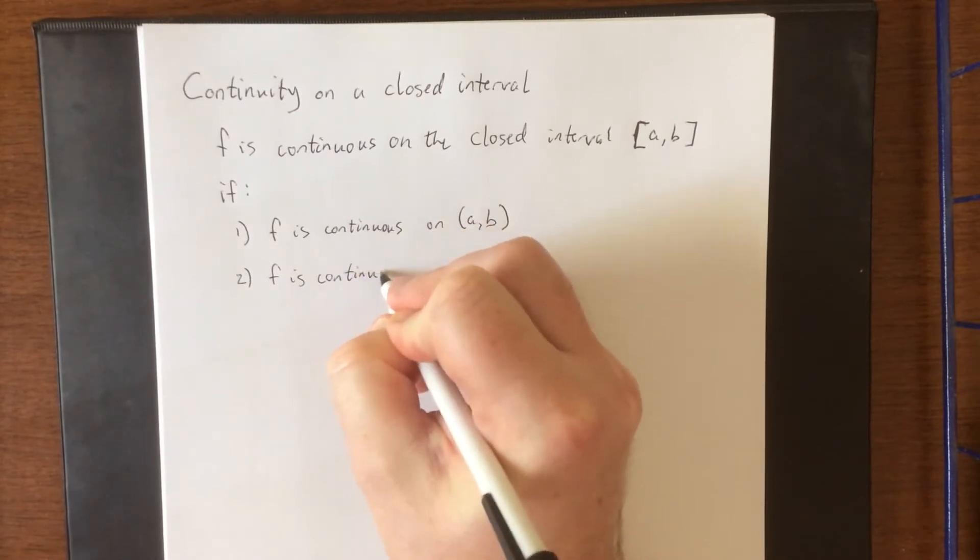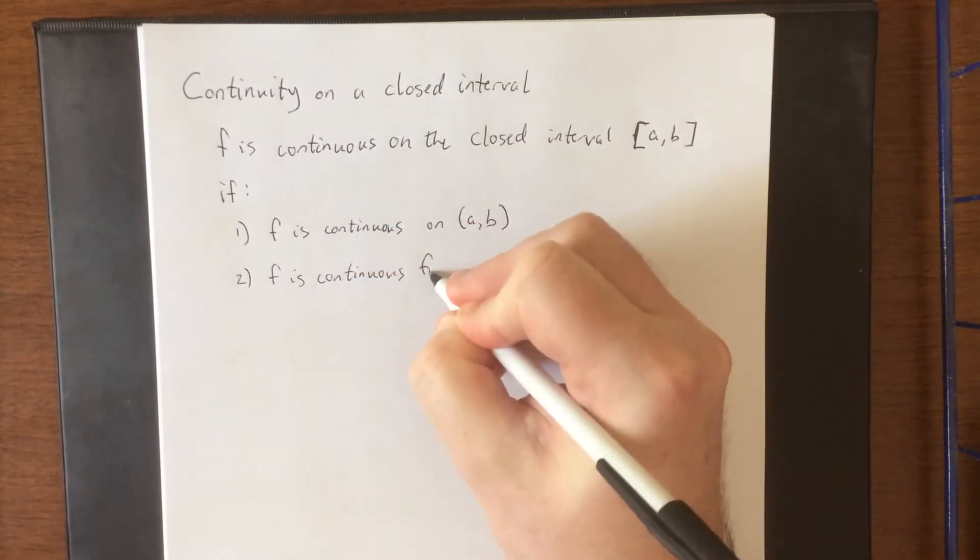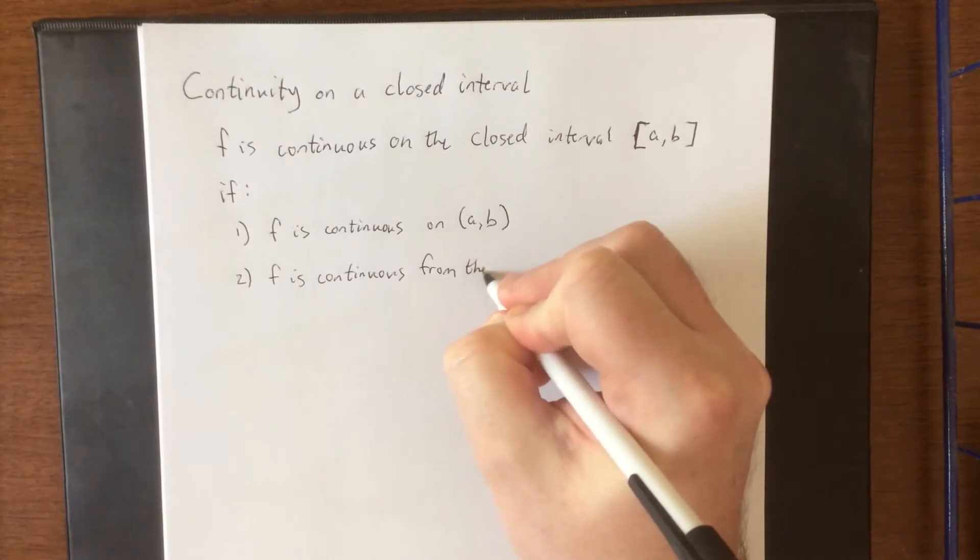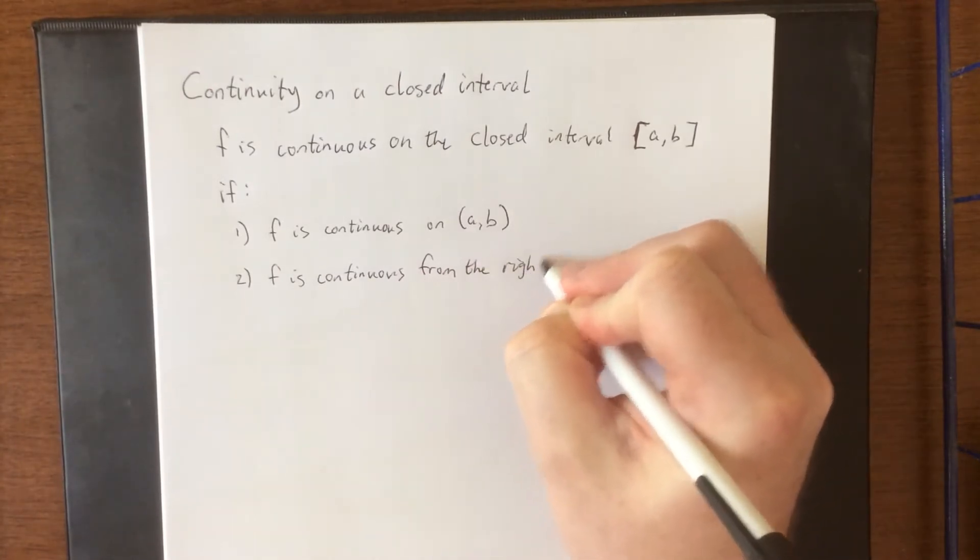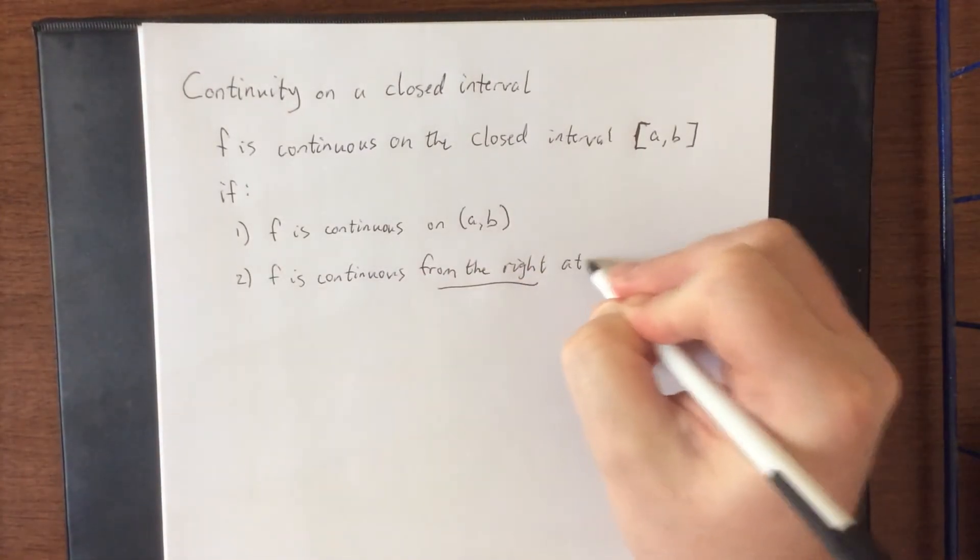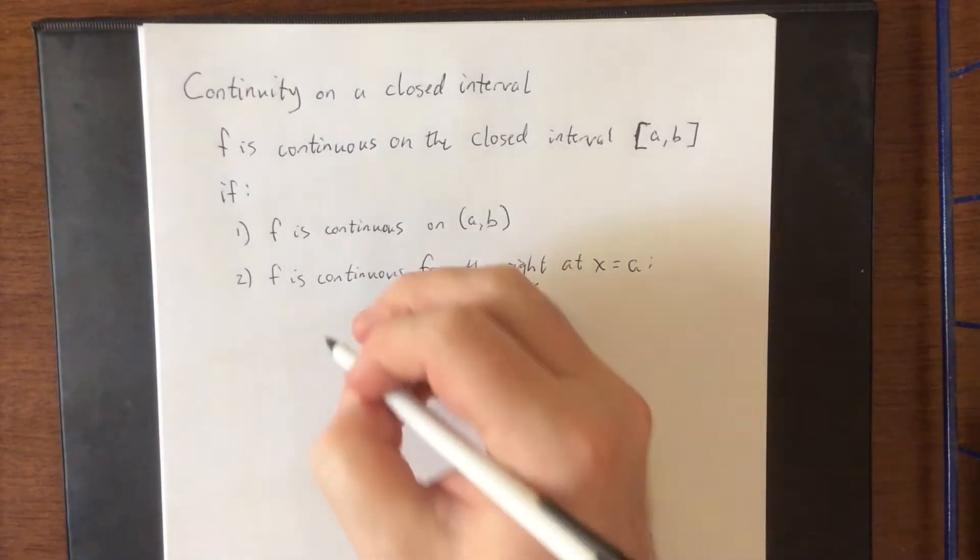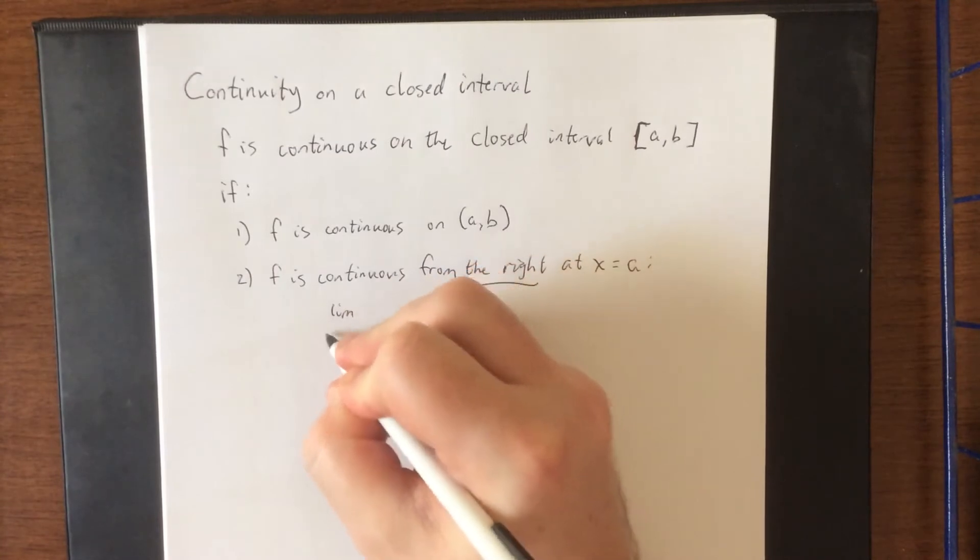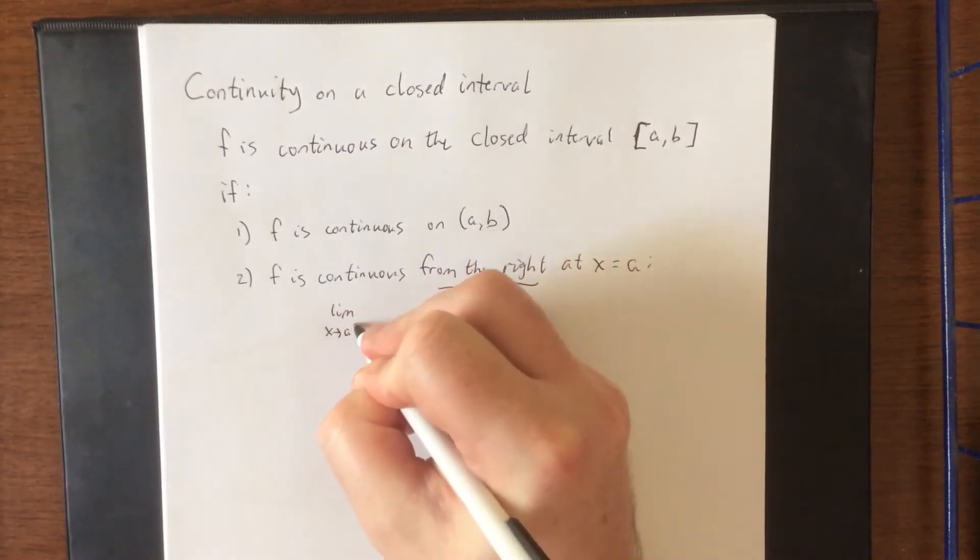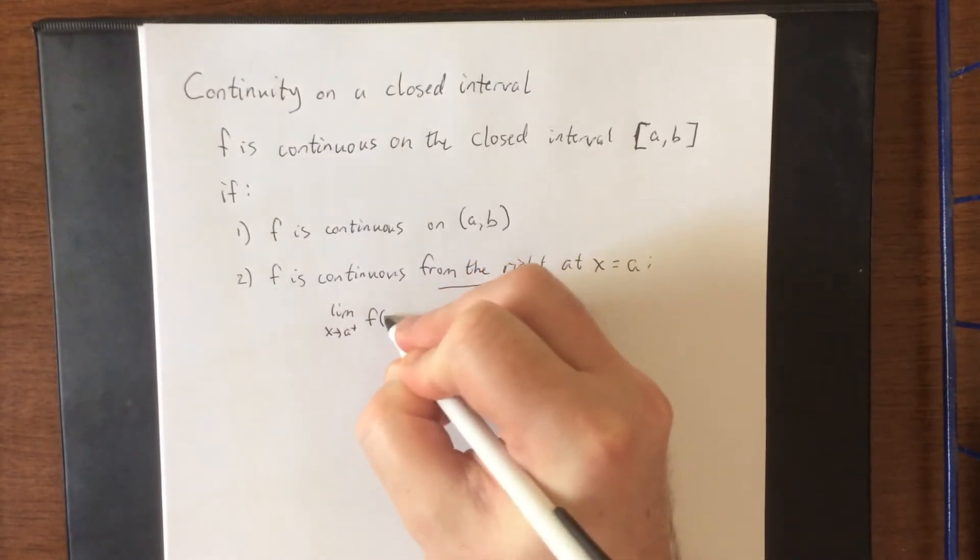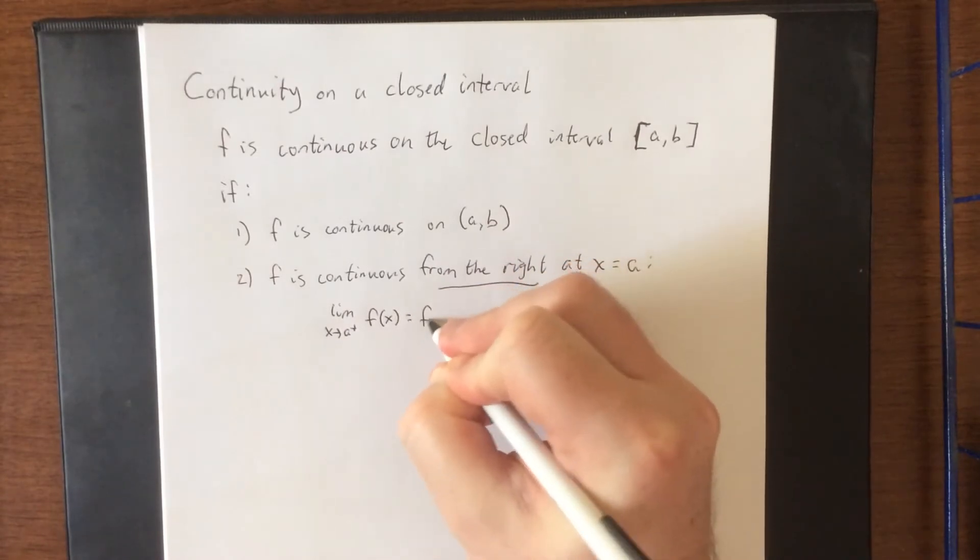F is continuous from the right at x equals a. Now what it means to be continuous from the right is that the limit as x approaches a from the right of f(x) is equal to f(a).